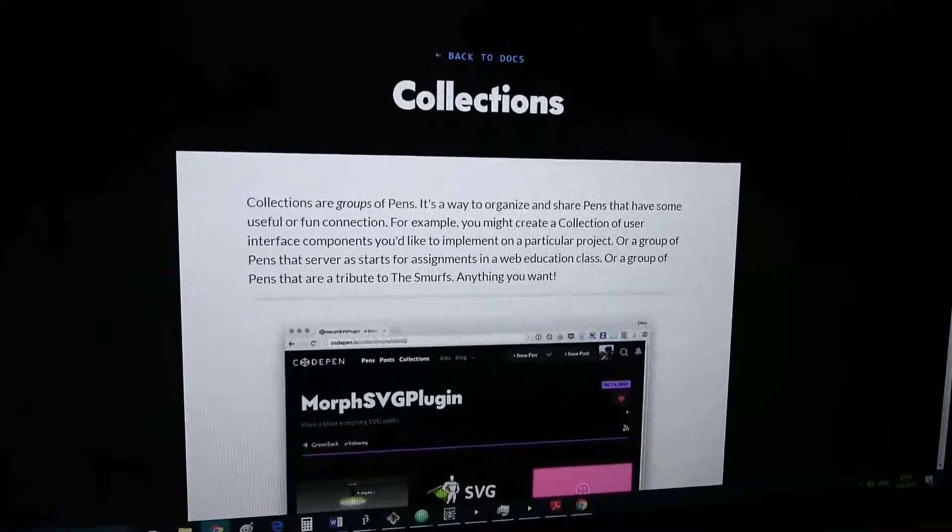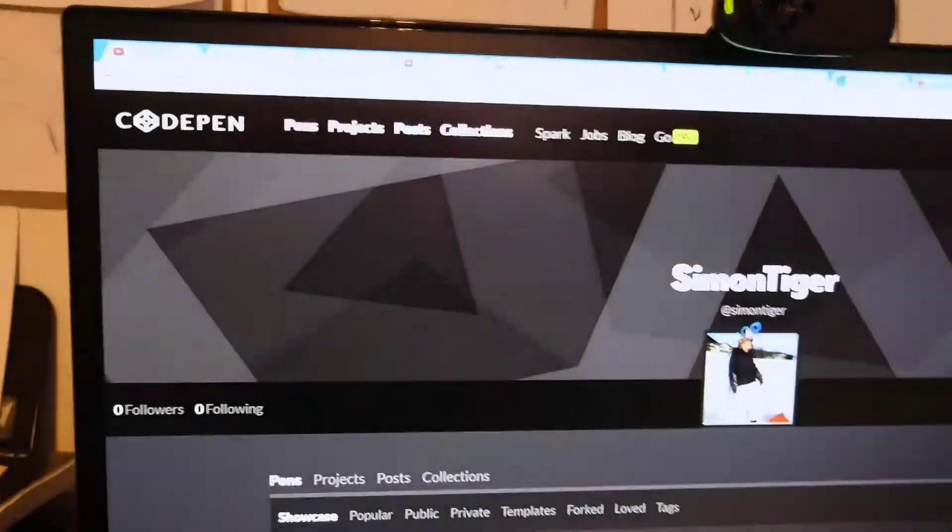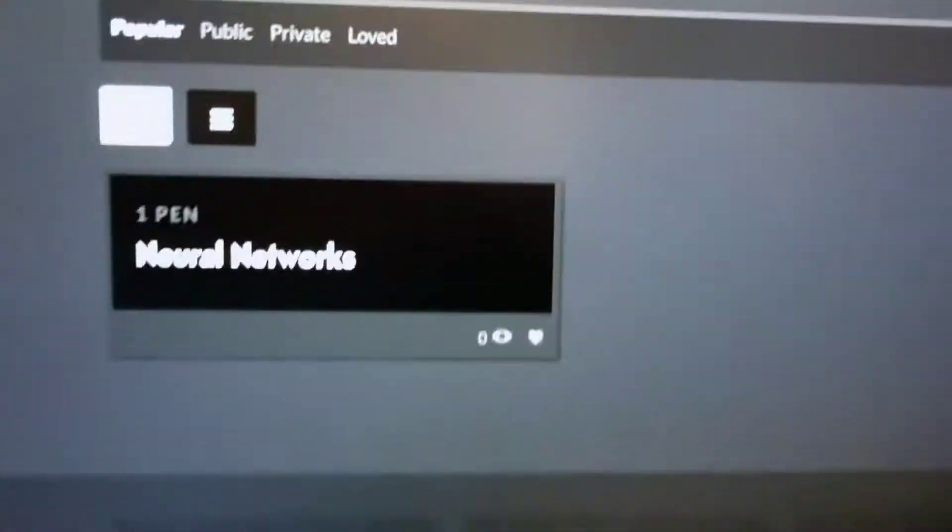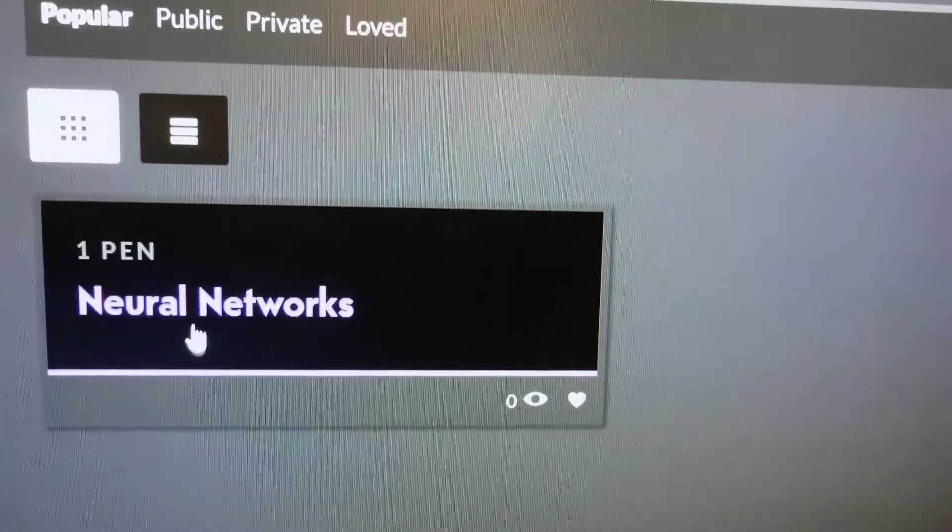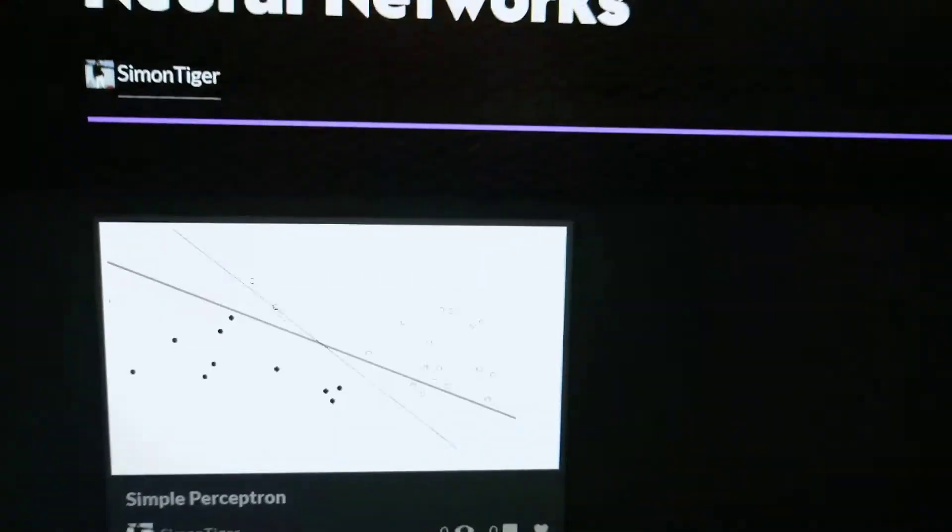If we go to CodePen.com slash Simon Tiger. This is your account. I have collections. And you made a collection neural networks. And you click on it. And then you get to this project.